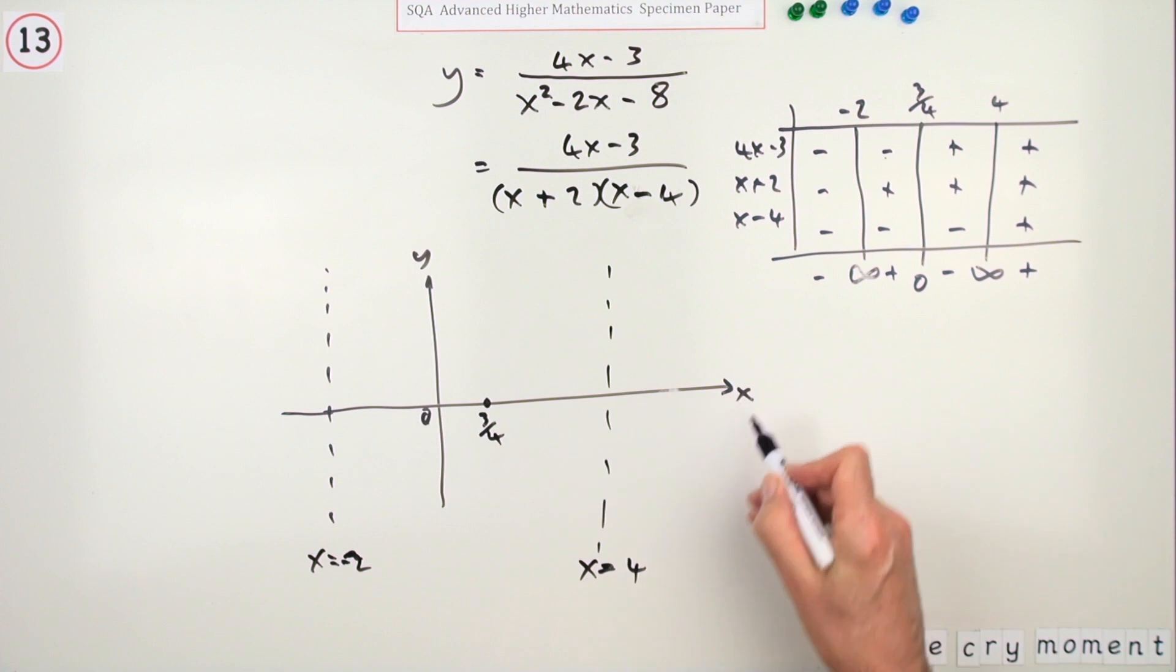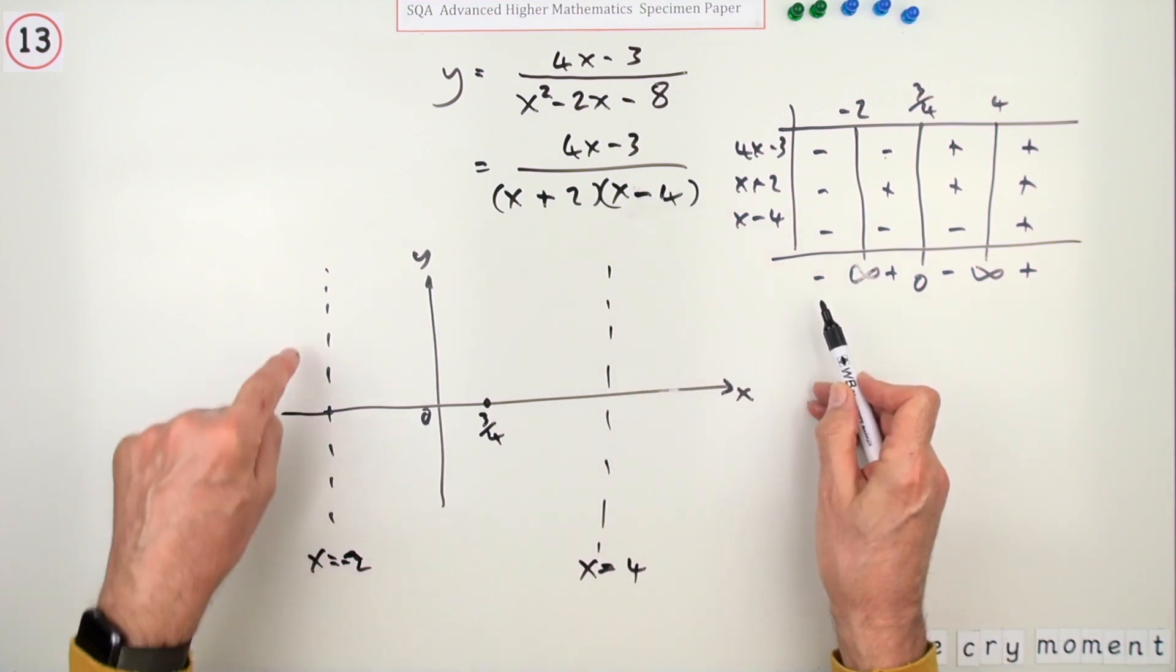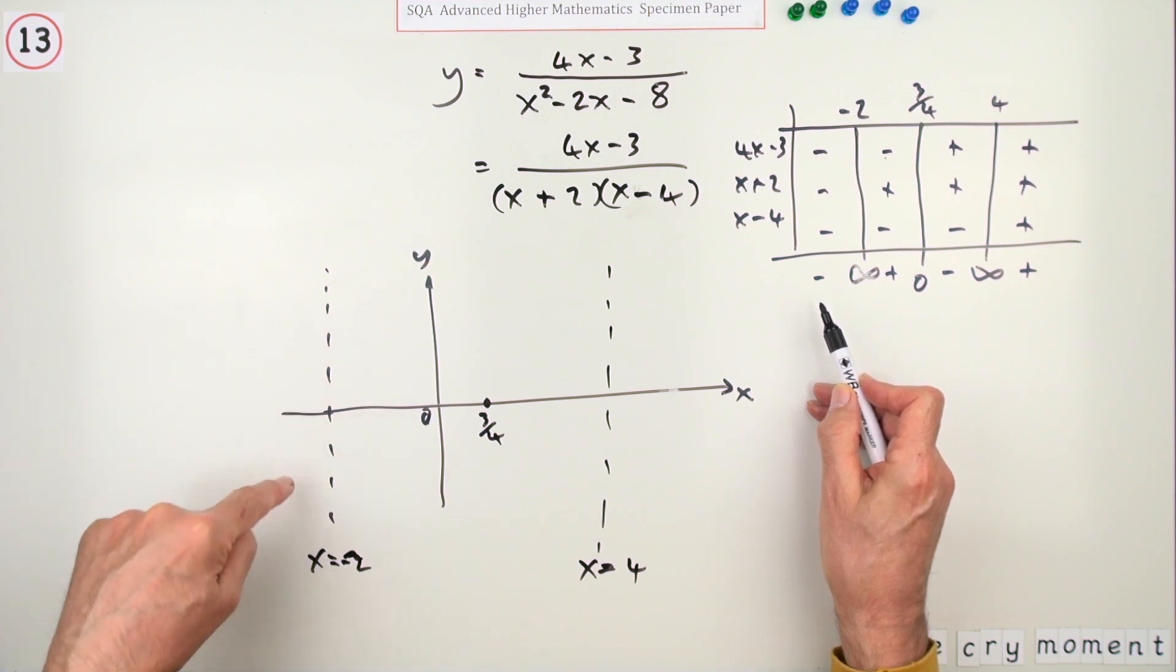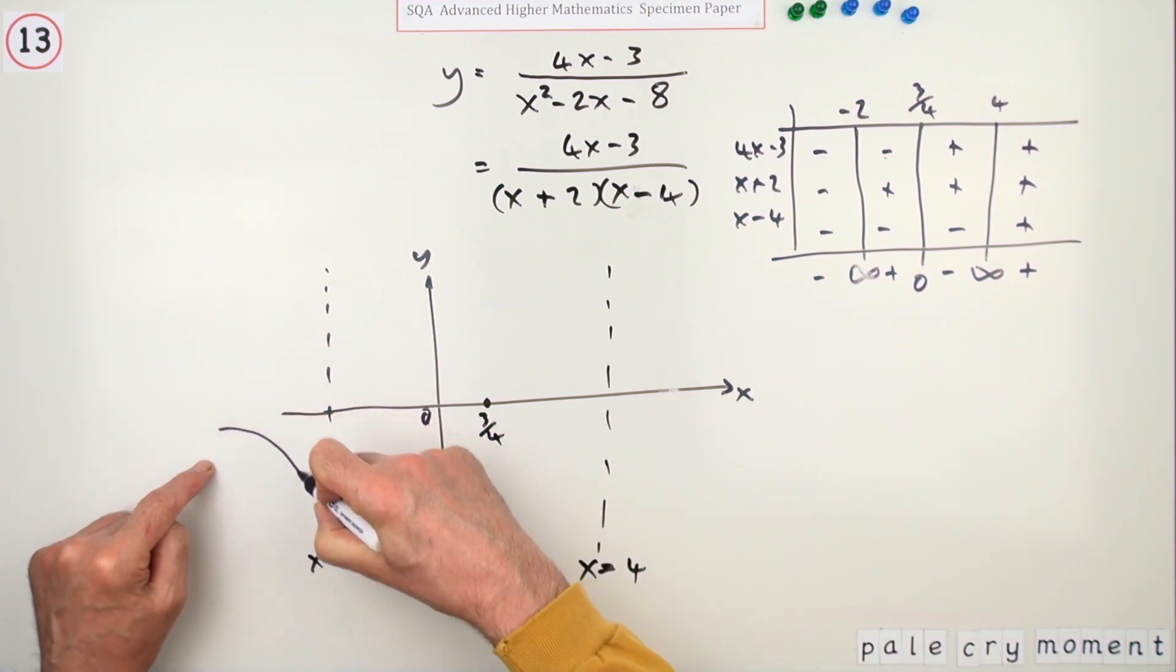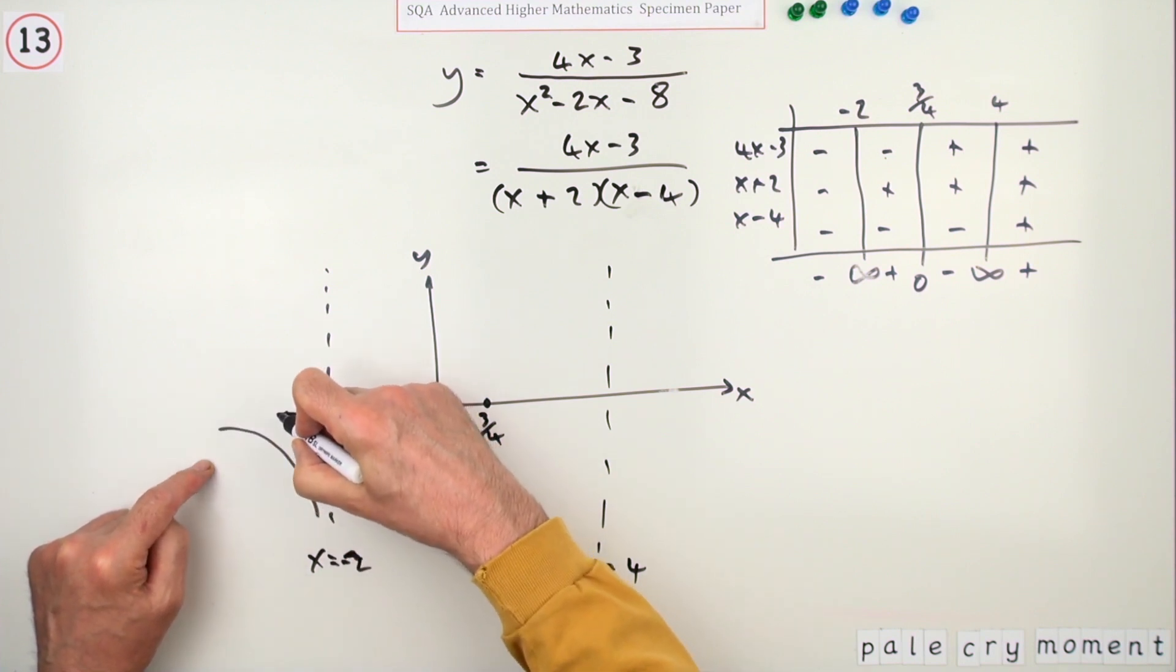You already know there's a horizontal asymptote, and this shows you the behavior. What's the value before this line? The answer's negative, so if it's negative and that's an asymptote, it must look like this. If there's an asymptote here...